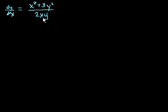With all of these homogeneous equations, we don't know if it's homogeneous yet, so we have to try to write it as a function of y divided by x. It looks like we could do that if we divide the top and the bottom by x squared.